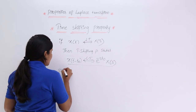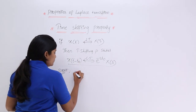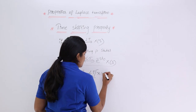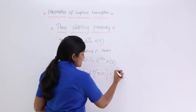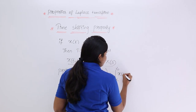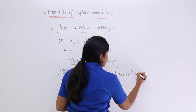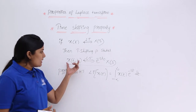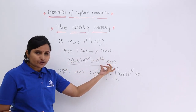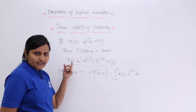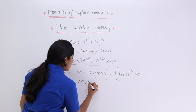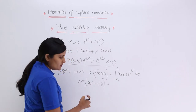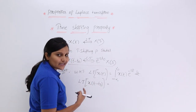Now I am going to prove this property. We know the Laplace transform of X of T is the integral from minus infinity to infinity of X of T into E power minus ST dt. We need to prove that the Laplace transform of X of T minus T naught is equivalent to E power minus S T naught into X of S. So I am considering my signal as X of T minus T naught.